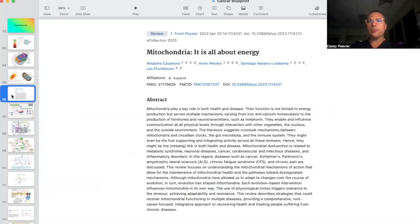If I could have you challenge to read one medical or scientific paper, it would be this paper. This is an extremely well written and comprehensive look at mitochondria called Mitochondria: It's All About Energy. It says mitochondria play a key role in both health and disease. The function is not limited to energy production but serves multiple mechanisms varying from iron and calcium homeostasis to the production of hormones and neurotransmitters such as melatonin. They enable and influence communication at all physical levels through interactions of their organelles, the nucleus, and the outside environment. The literature suggests crosstalk mechanisms between mitochondria and circadian clocks, the gut microbiome, and the immune system. Hence, they may be the missing link in both health and disease.